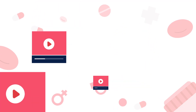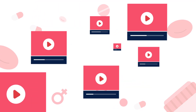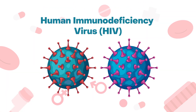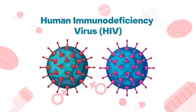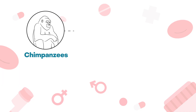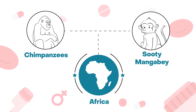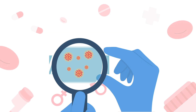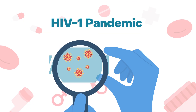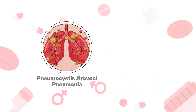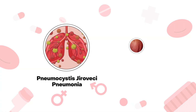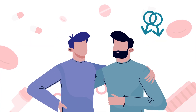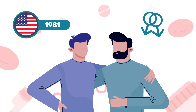In this and the next few videos we will try to answer these questions in more detail. The human immunodeficiency virus, or HIV, originated in chimpanzees in the Suti Manga Bay in Africa. The first clinical manifestation of HIV and AIDS, heralding the HIV pandemic, was the development of Pneumocystis jirovecii pneumonia and Kaposi's sarcoma in previously healthy men who had sex with men in the United States in 1981.